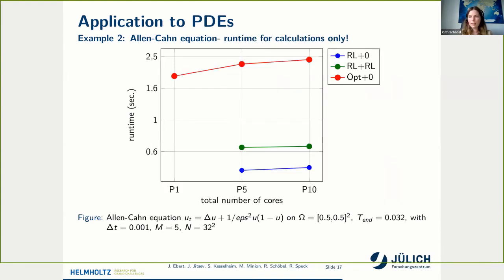Looking at the runtimes for this 2D example with five time nodes: because there are not many spatial elements needed, there is no spatial speedup. It seems better in this case to use time parallelization only, which is possible with RL or opt.